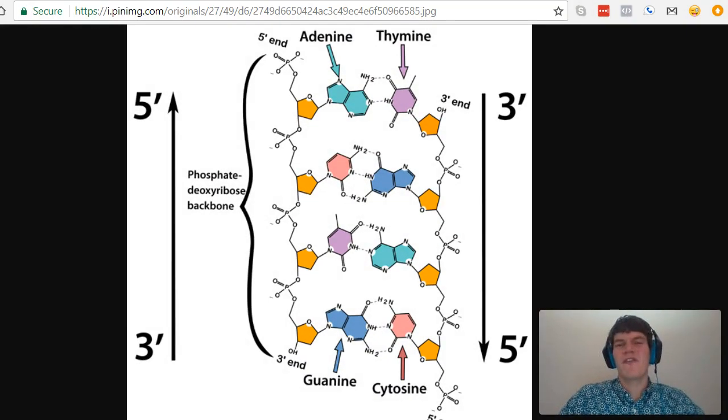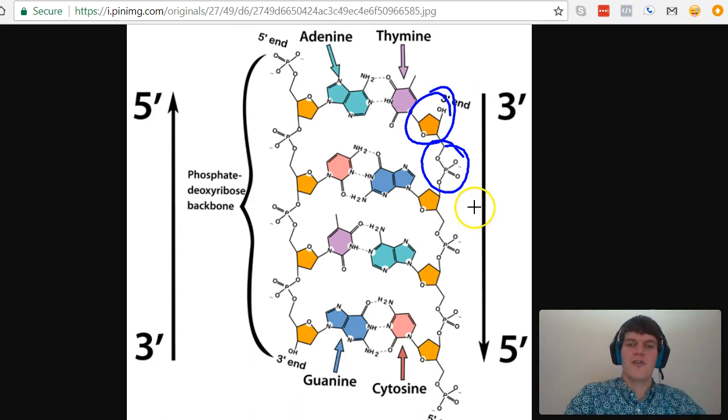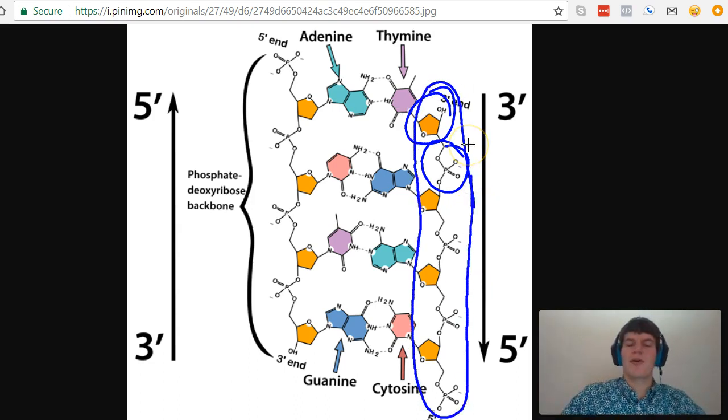This practice question is fairly straightforward if we understand the basic structure of DNA. The backbone of DNA is composed of phosphate groups as well as ribose sugars. So this whole thing right here consists of the backbone of DNA.